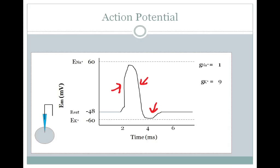The time it takes to complete an action potential is on the order of 2 milliseconds or so. Even though you've got way more potassium and sodium channels open at different points of the action potential, you will never hit the equilibrium potentials of sodium or potassium as long as there is still some conductance for the other ion. You can only be at that equilibrium potential if your entire conductance is going through the sodium or potassium channels.